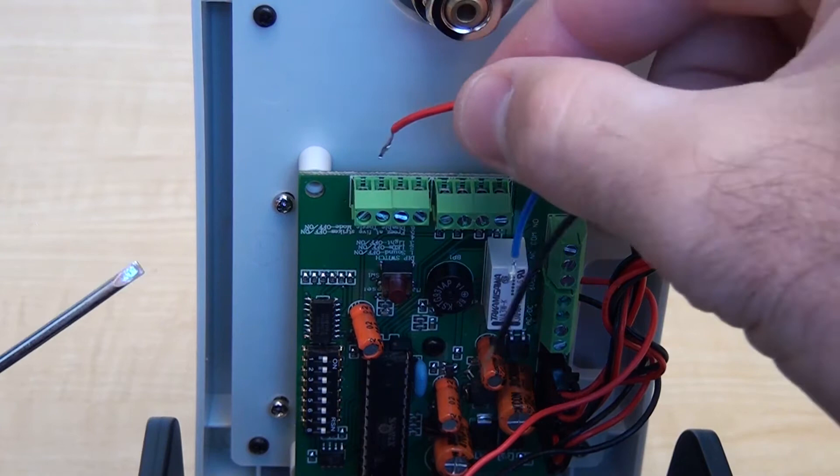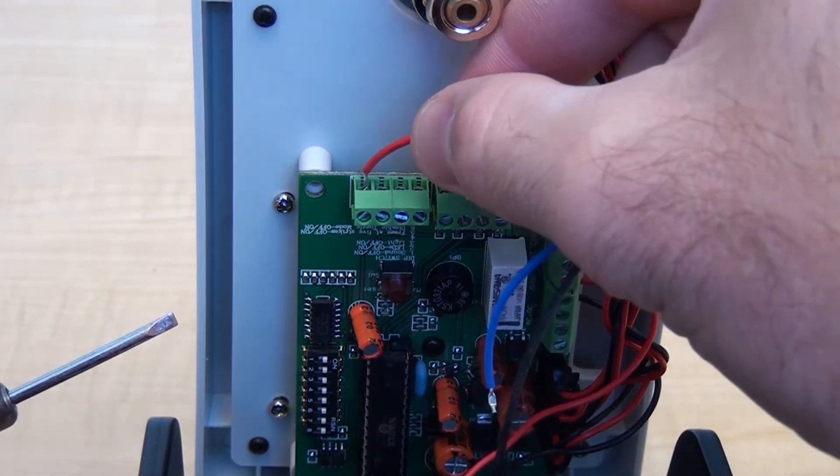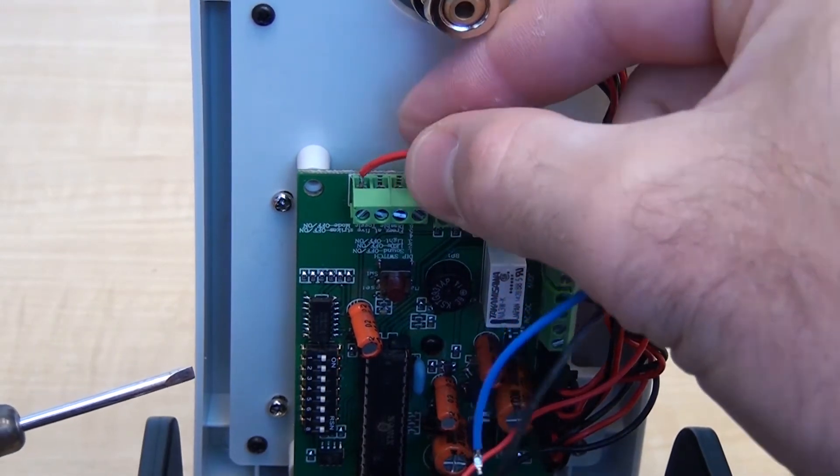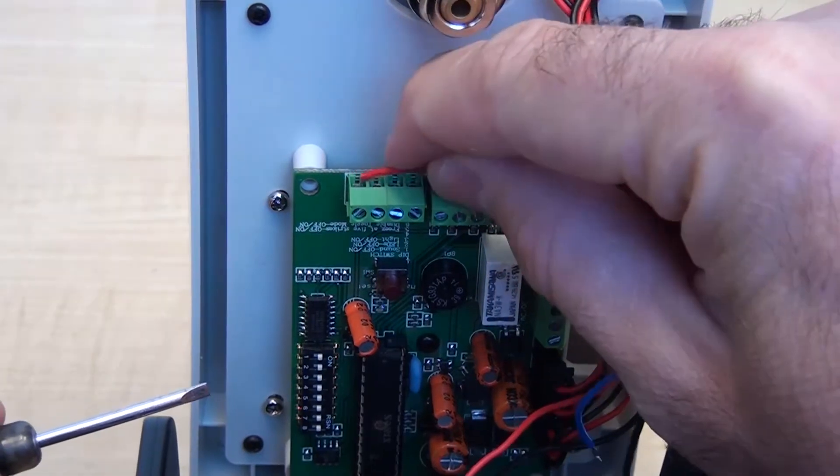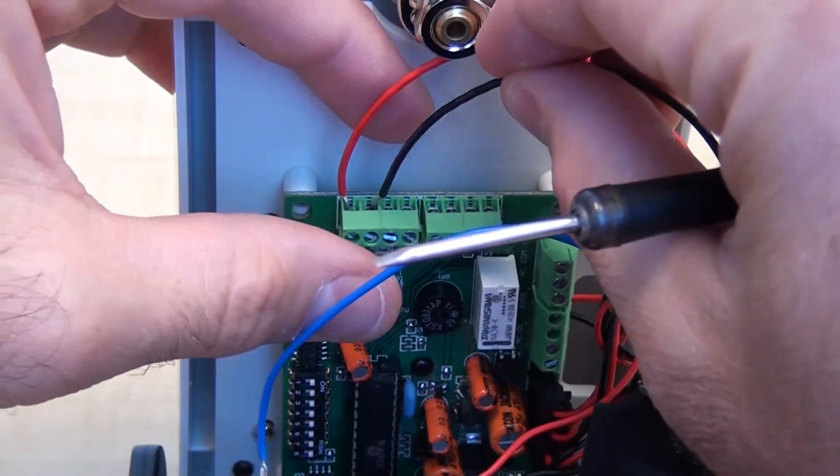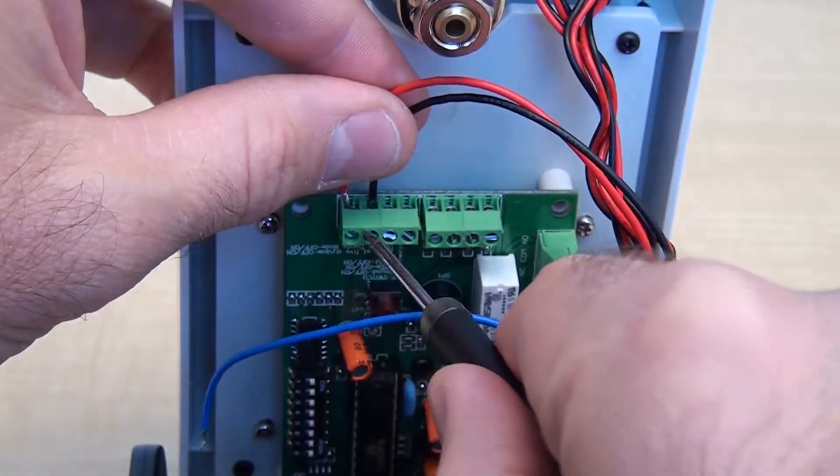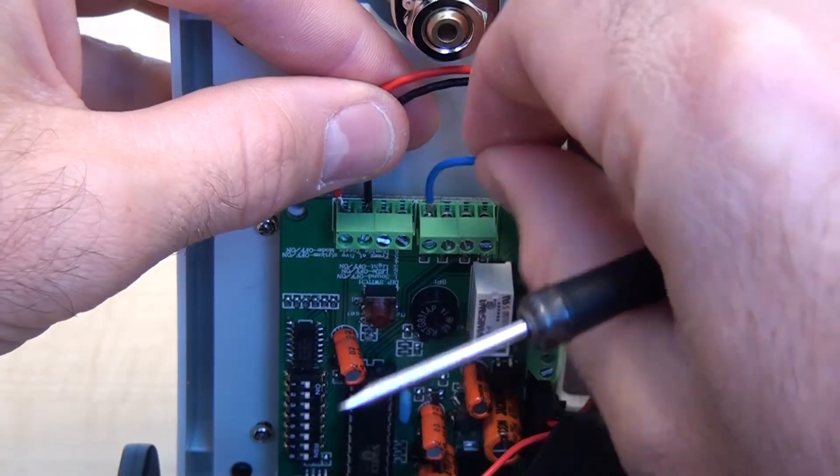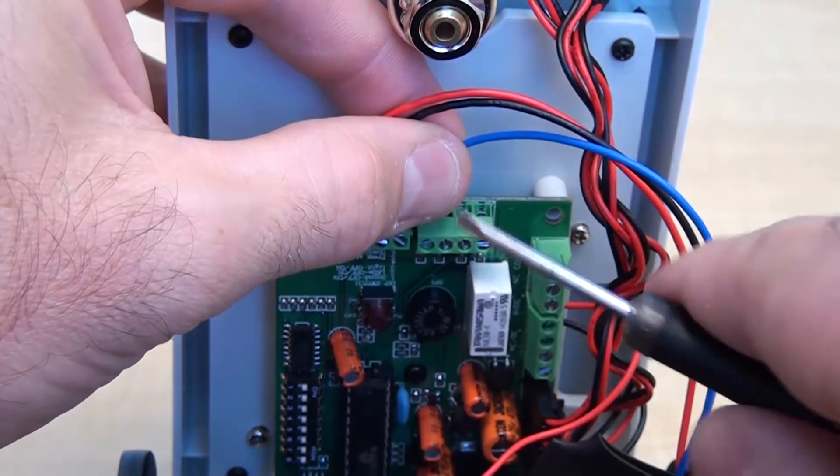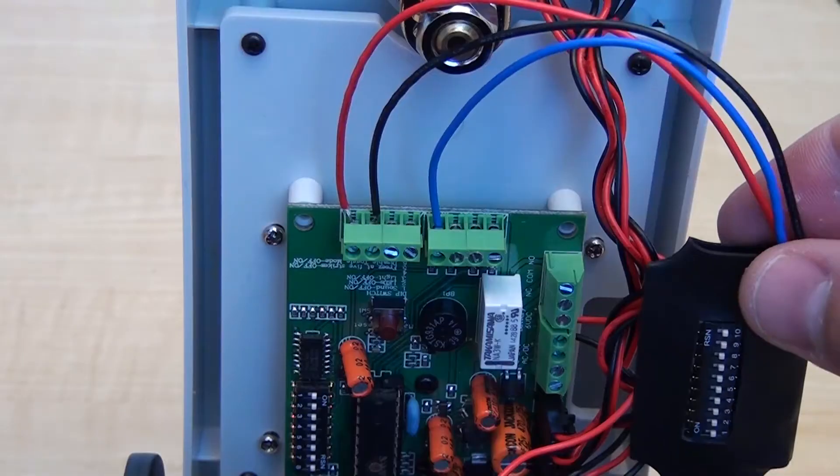To install a dip switch module, connect the red 6-volt positive wire into the V positive terminal on the board, and connect the black ground wire to the V negative terminal on the board. Then connect the blue data wire to the RF1 terminal or channel 1 terminal on the board.